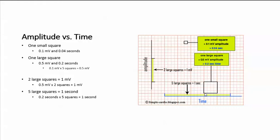In the large square, each large square is 0.2 seconds, and we get that by taking the time in a small square, which is 0.04 seconds, times 5 squares. That gives us 0.2 seconds.